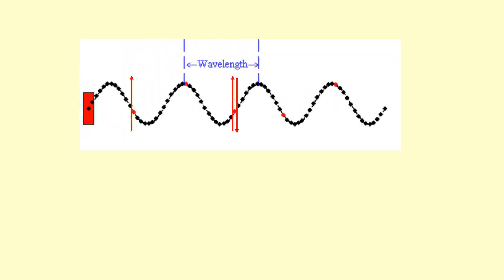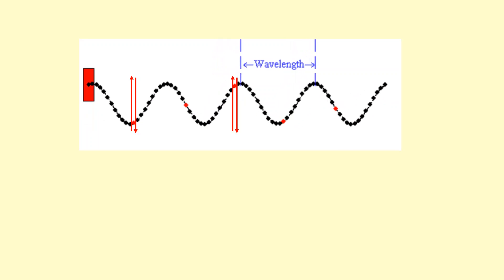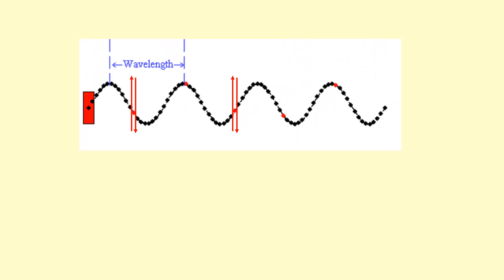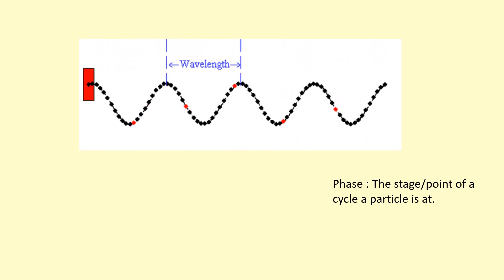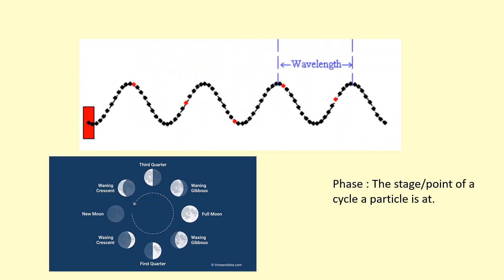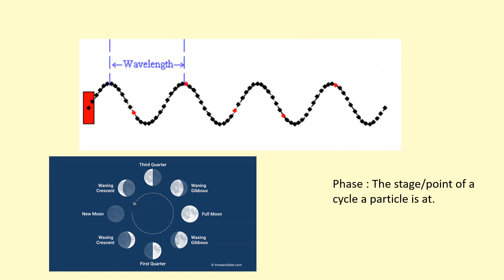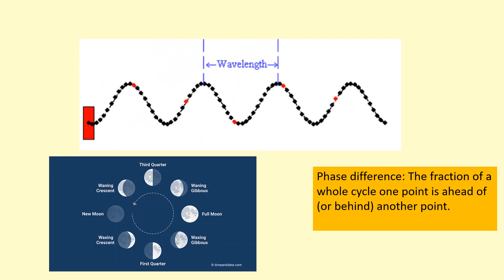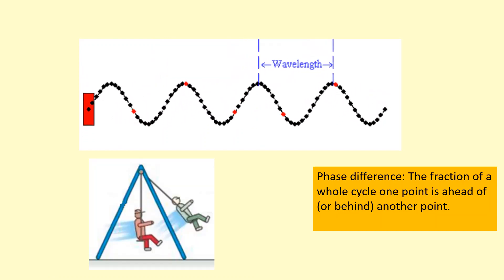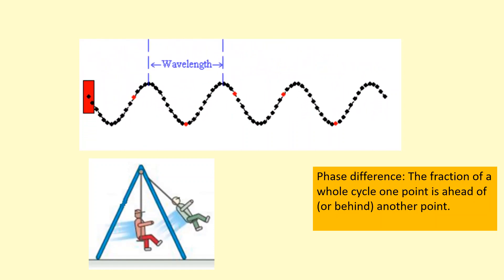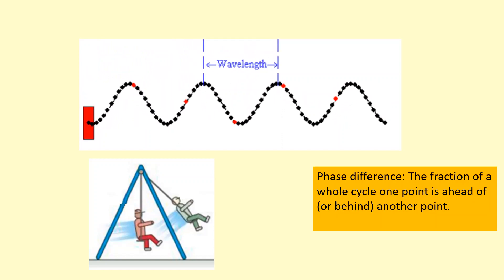Here we've got particles in a wave oscillating up and down, and another particle on this end also oscillating up and down, but they're at different stages of their cycle — as one reaches the maximum, the other reaches its minimum. We use the term phase to describe this, because phases are like different stages of a cycle, like different phases of the moon's cycle. Phase difference is the fraction of a whole cycle one point is ahead of another. For example, the green particle's swing is almost a quarter of a cycle ahead, so we'd say that's pi over 2 radians ahead.